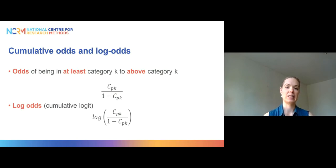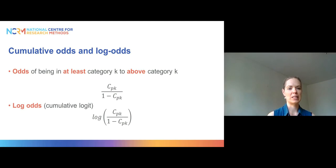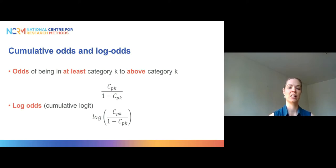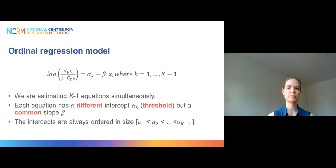Like with other probabilities, we can transform these cumulative probabilities into odds and log odds. If we take the cumulative probability CPk and divide it by its inverse (1 minus CPk), we get cumulative odds. Taking the natural logarithm of those odds gives us cumulative logits, just as in other logistic regression models. We continue to use this cumulative logit transformation in our ordinal model.